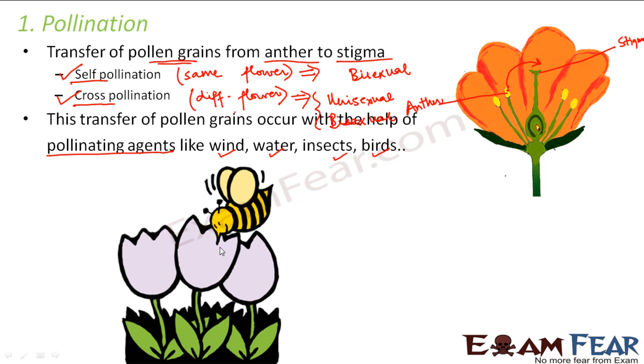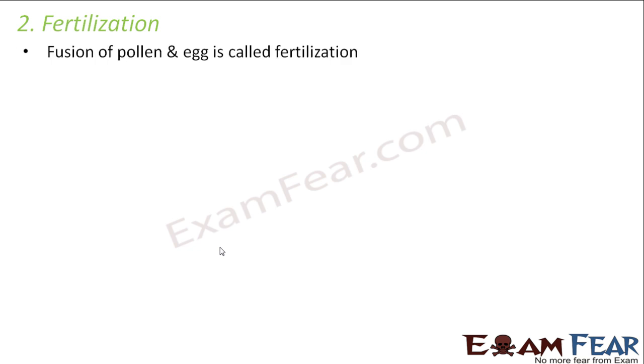This is how pollen grains reach the female reproductive part of the flower and arrive at the stigma. The next step is fertilization — the process where actual fusion takes place. The pollen grains will combine with the ovum. The pollen grains must travel from the stigma to the ovule, because the egg or ovum is present inside the ovule, which is inside the ovary. The fusion of pollen and egg is called fertilization.